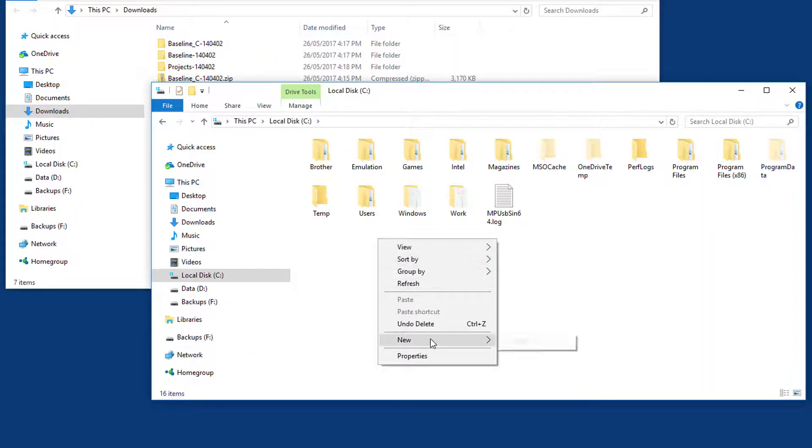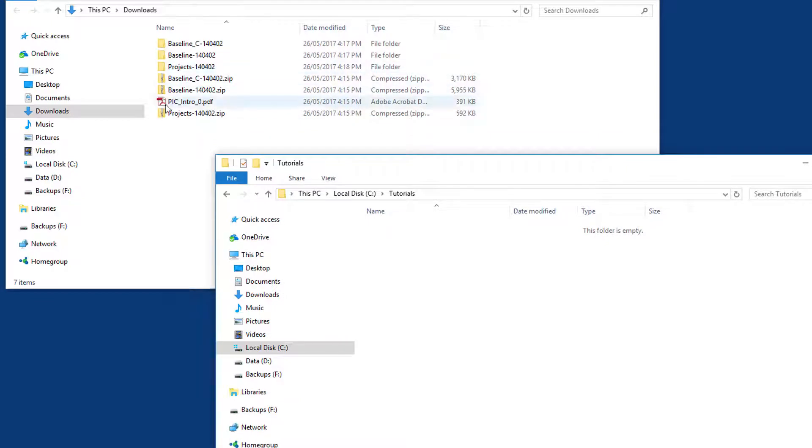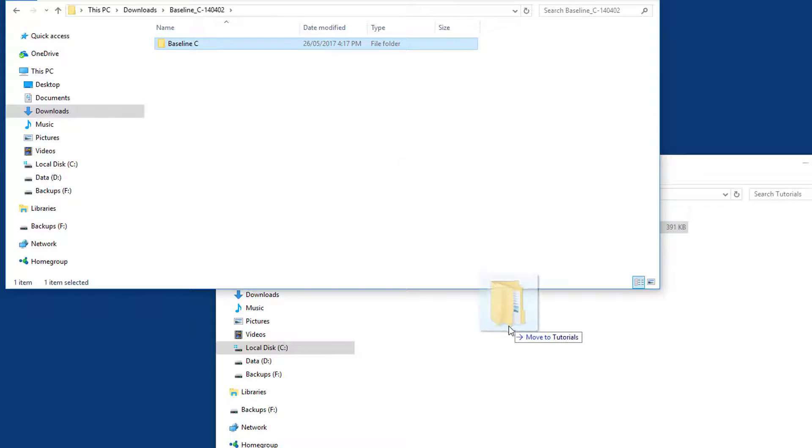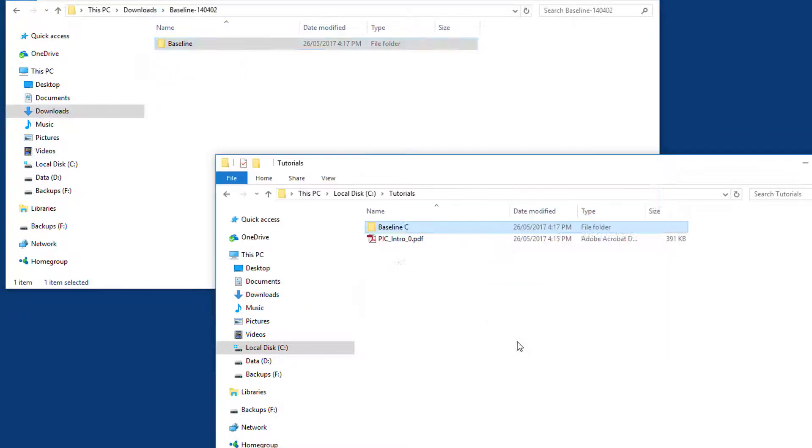You'll need to create a folder to keep the tutorials in. I'll call mine Tutorials, just to be original. Then, move the lessons into your tutorials folder. Each of the zip archives you extracted contain a single top-level folder, which you should move into the top level of your tutorials folder, as I'm doing here.